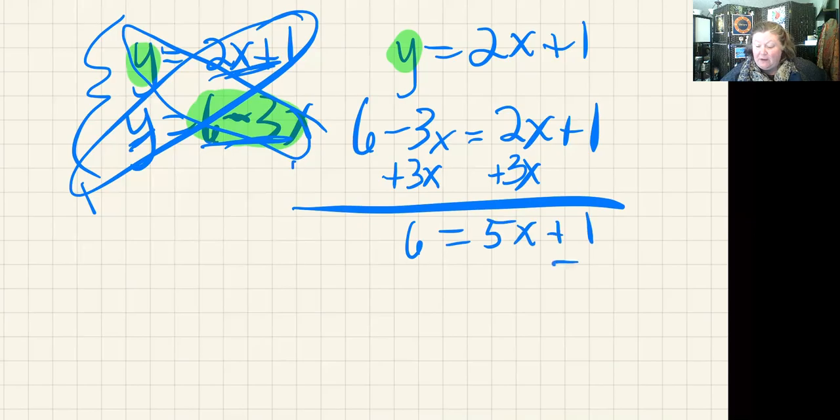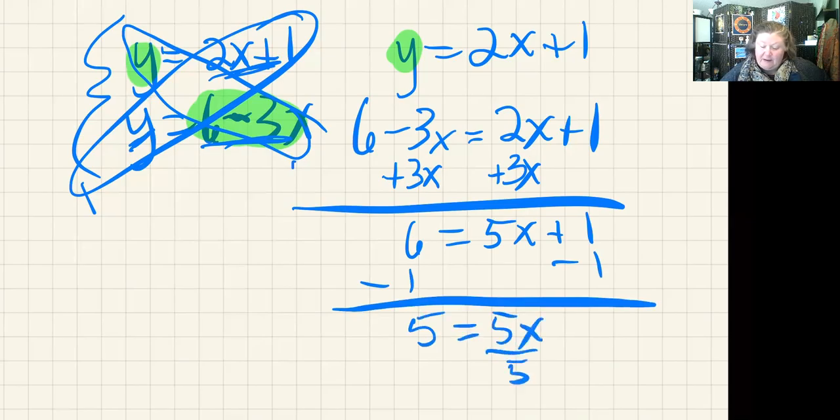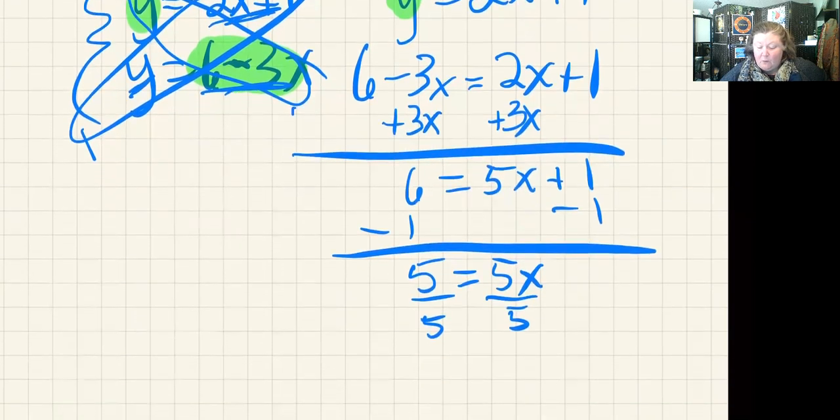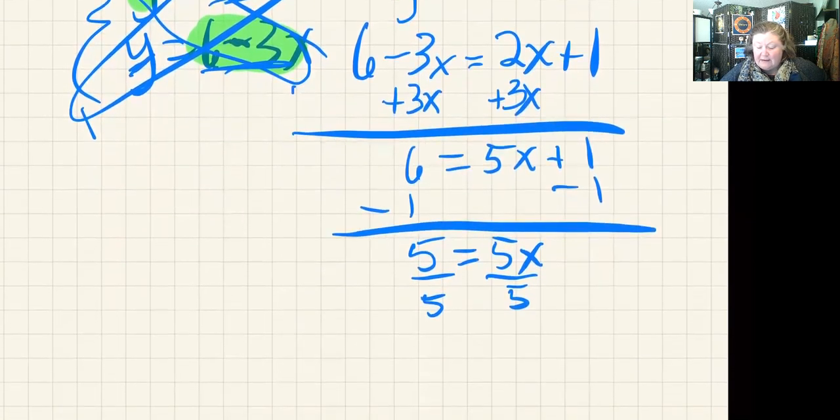I want to eliminate this 1, so I'm going to subtract it and move it to the other side, and I get 5 = 5x. Divide by 5. That means 1 = x.